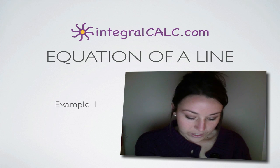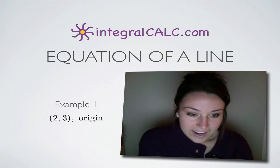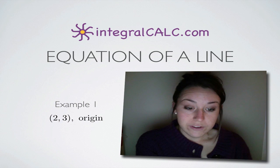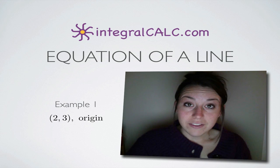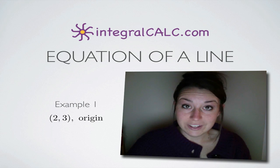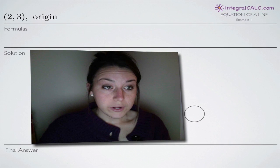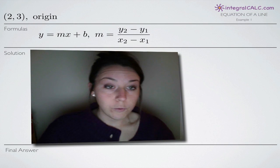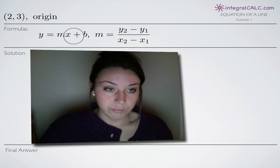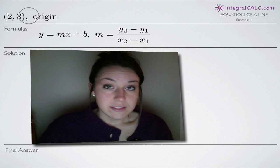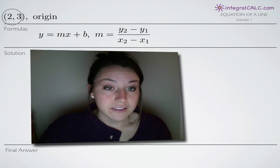We're going to be talking about how to find the equation of a line today. In this particular problem, we're given two pieces of information, in this case two points. One is the point (2,3) and the other is the origin, which is the point (0,0). Using these two points and the slope-intercept form, we will find the equation of the line that connects these two points.